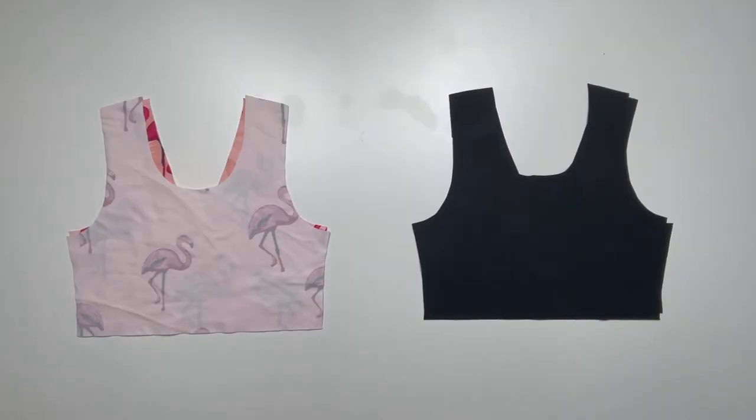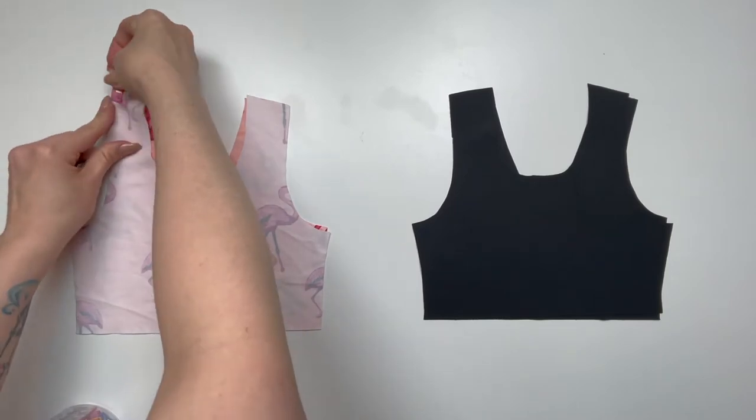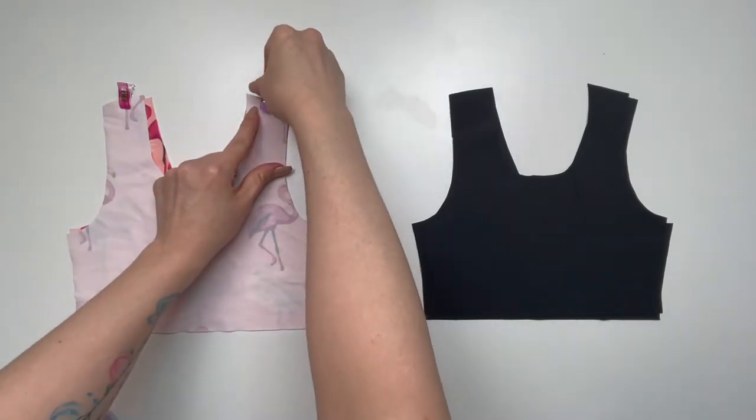To begin our reversible bodice, we're going to start with the burrito roll method. Place your fabrics right sides together and pin or clip along the shoulder seams.